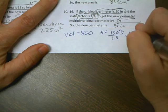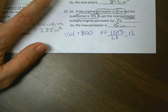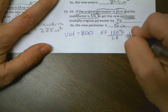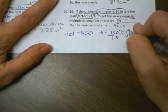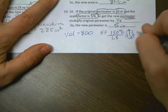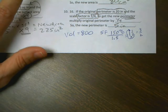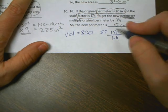What's the fraction? 1.5. Can I change that to an improper fraction? Yes. 2 times 1 is 2, plus 1 is 3, so 3 over 2 is the scale factor 150%. Those are the same thing.